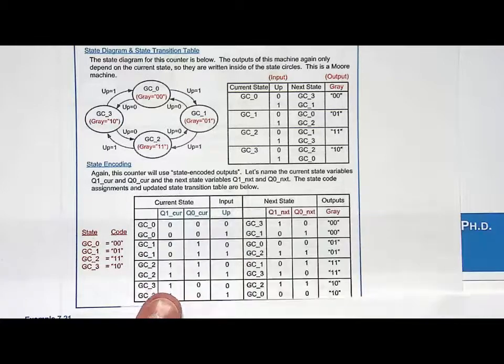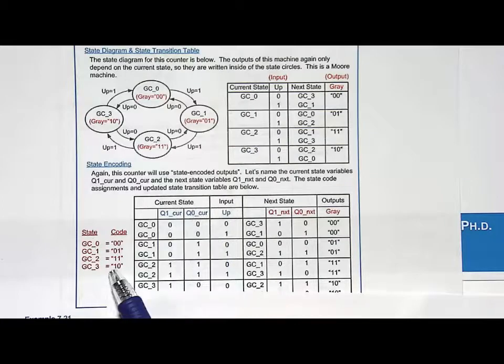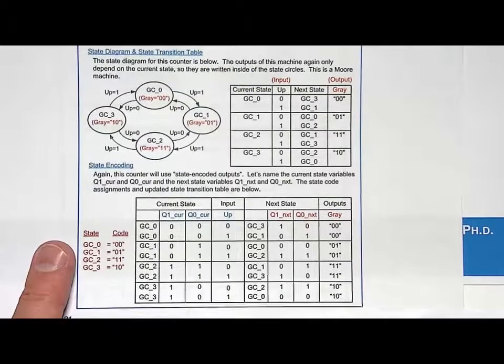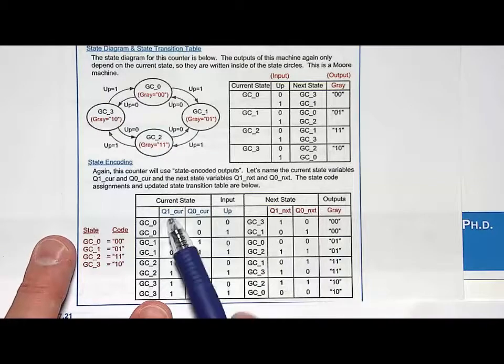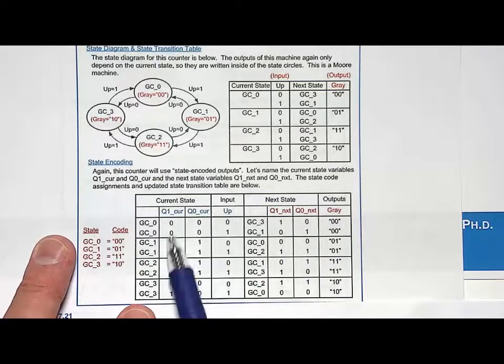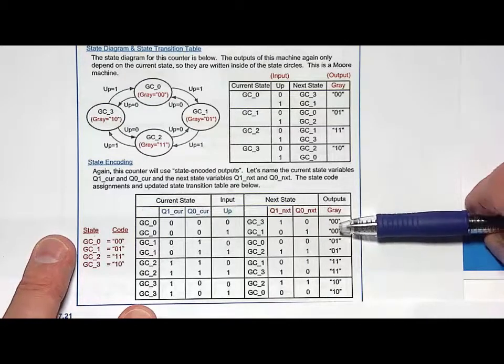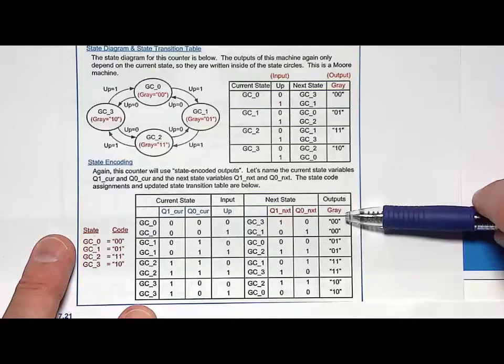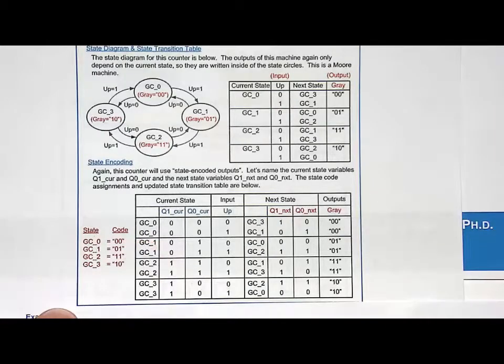Now, I choose my state variable names. I'm going to call them Q1 current, Q0 current for current state. I need one variable name for each bit within the state code. And then I need names for the next state variables which are going to be Q1 next and Q0 next. And then all I do is I fill in the codes. I went ahead and completed the table, filling in all the rows. And then I listed over here for gray, I listed the output for each one. How many D flip-flops do we need? We need two. We need one for each bit within the state code. So that is my state memory synthesis.